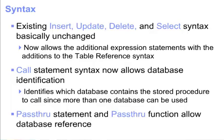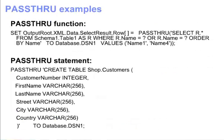The pass-through statement and the pass-through function both allow a database reference. The pass-through function evaluates an expression and executes the resulting character string as a database statement, returning a result set. This example performs a select on table 'table1' in schema 'schema1' in database 'dsn1', passing two parameters to the where clause and asking for the result set to be ordered in ascending name order. The result set is assigned to the select result folder.